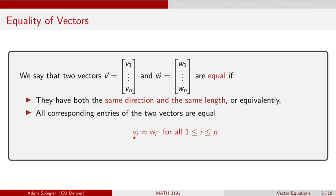In other words, we need every i-th entry of v to equal the i-th entry of w. In the next couple of videos, we will talk about how we can add two vectors and how we can multiply a scalar times a vector.